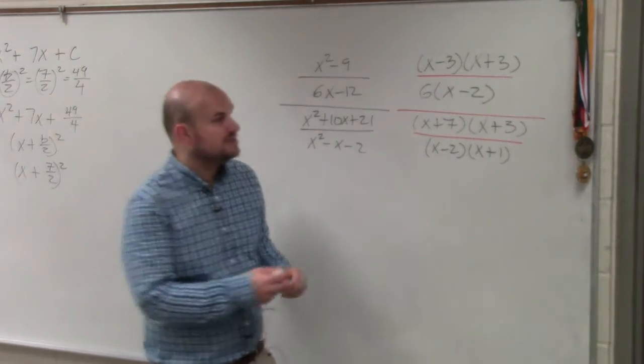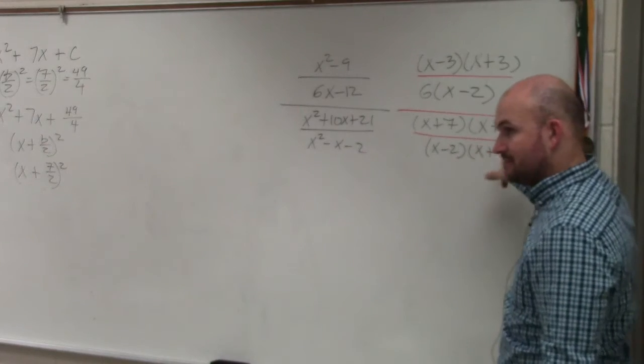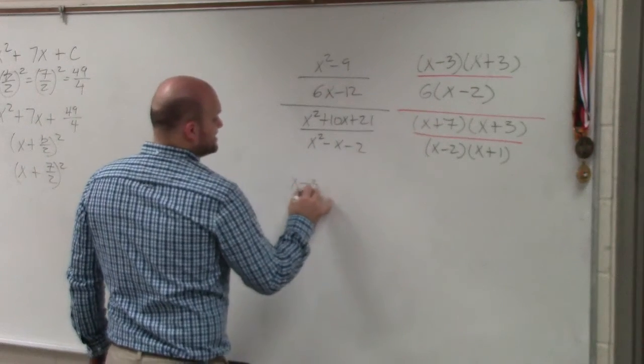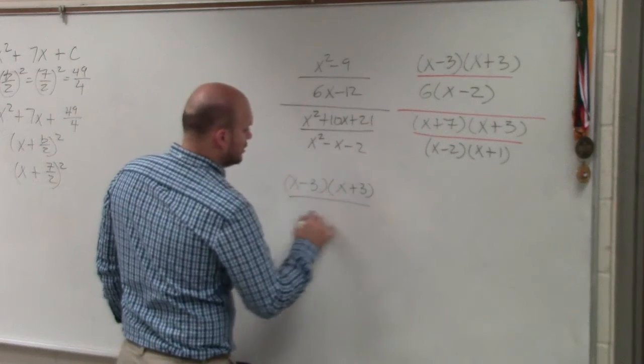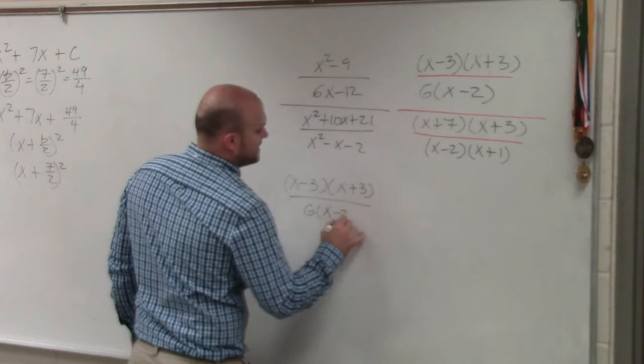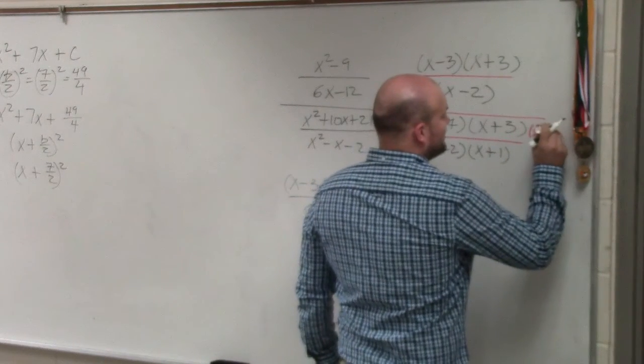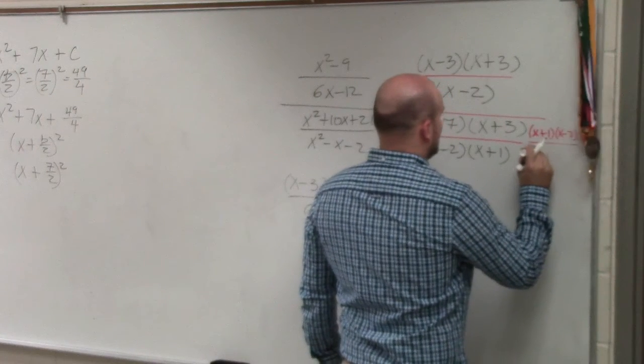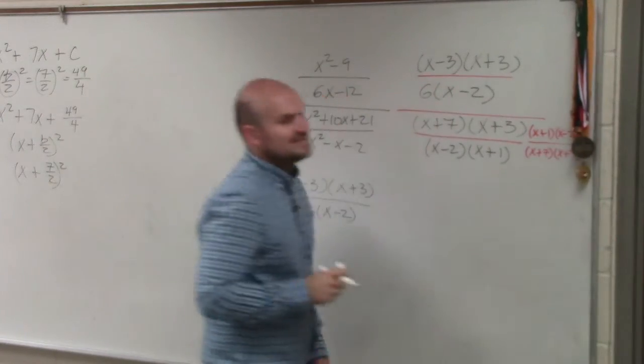So basically, what I can do is just multiply by the reciprocal of my divisor. So I can rewrite this as x minus 3 times x plus 3 all over 6 times x minus 2, and then multiply it by the reciprocal. Because whenever you have a fraction in the denominator, if you multiply by that reciprocal, that's how you get rid of it.